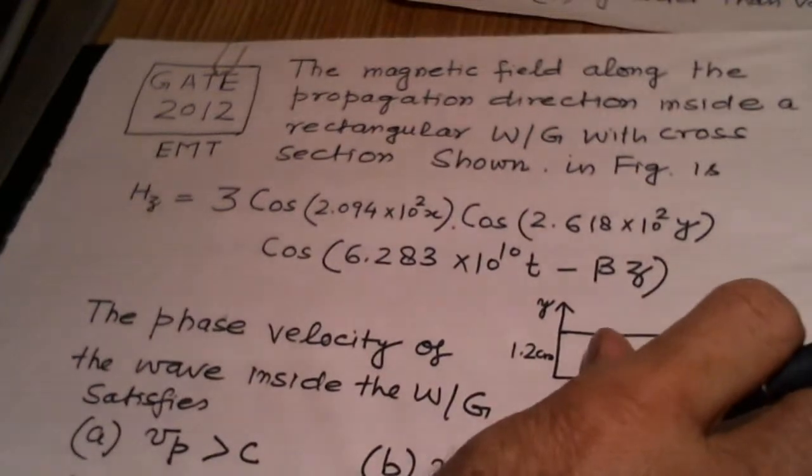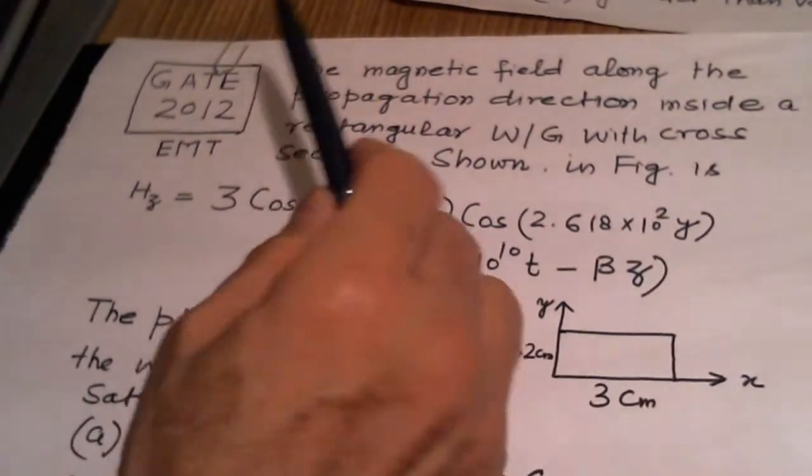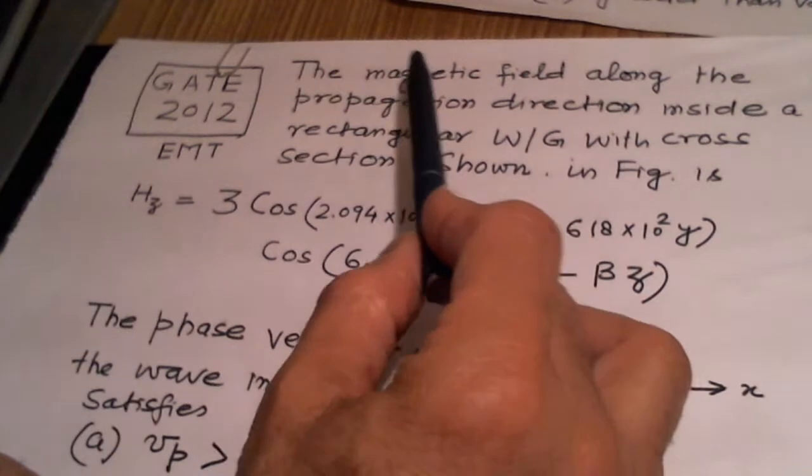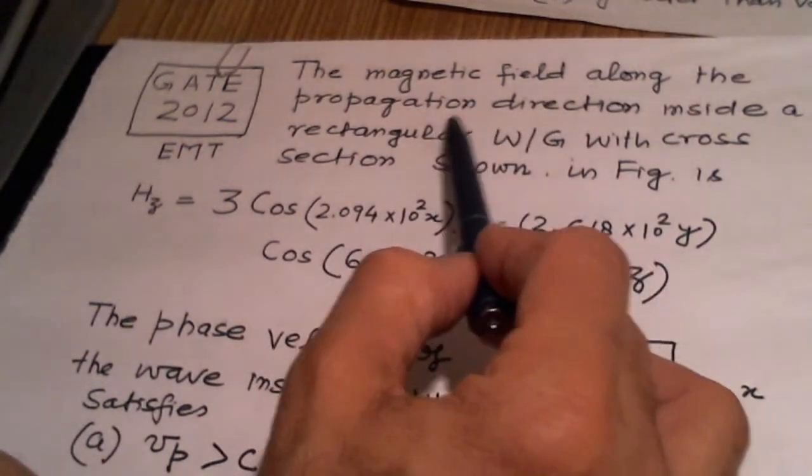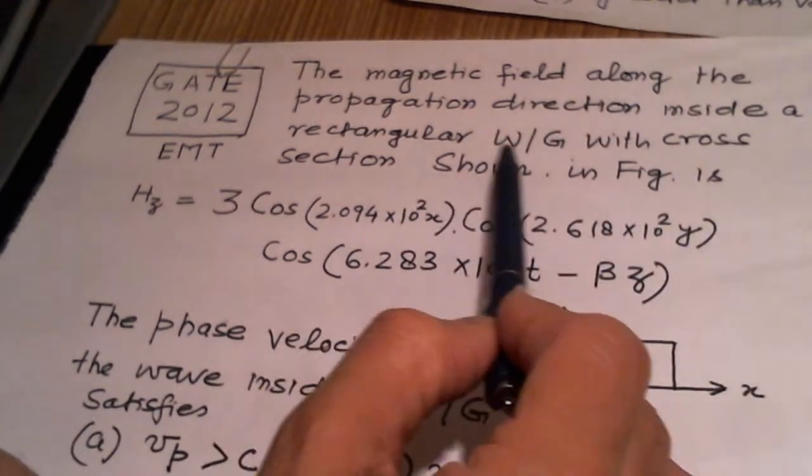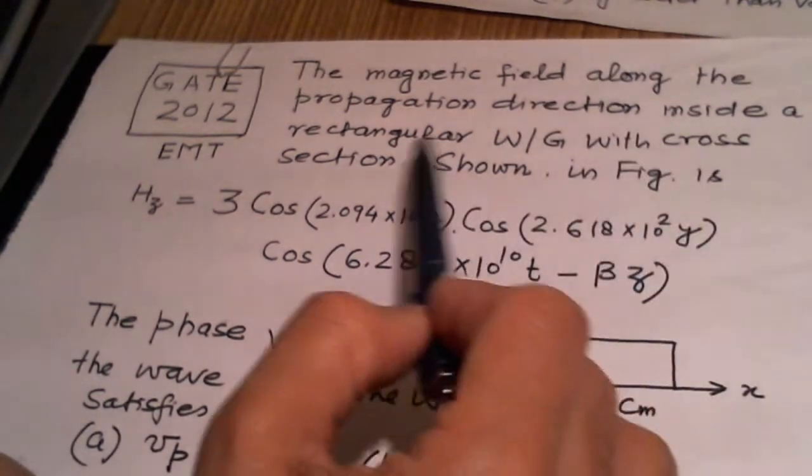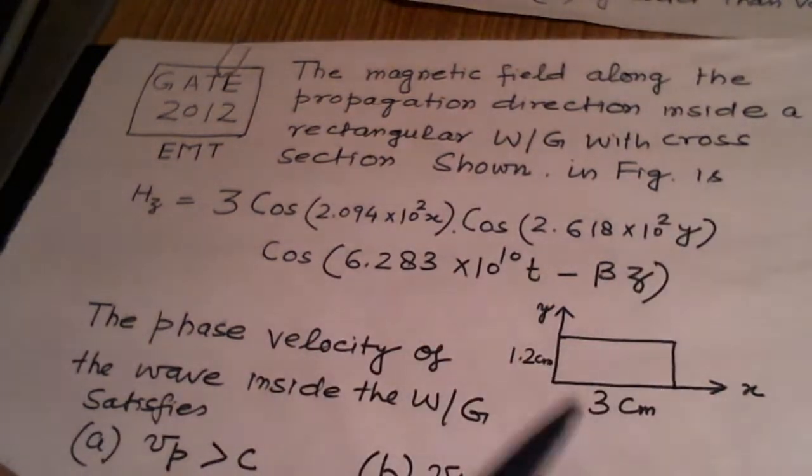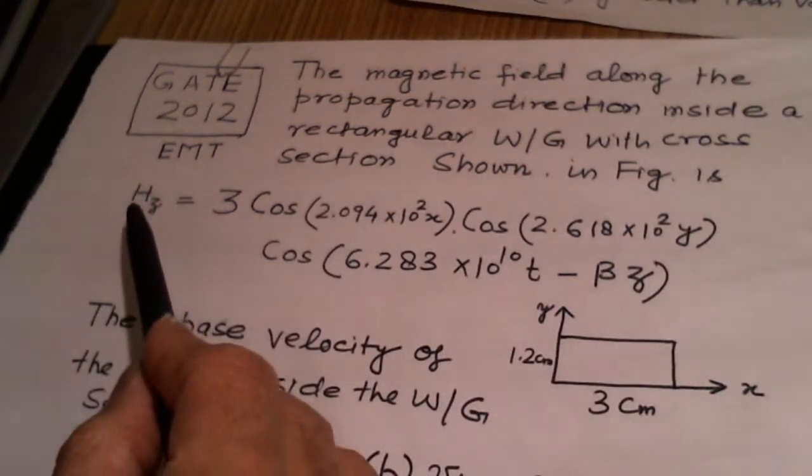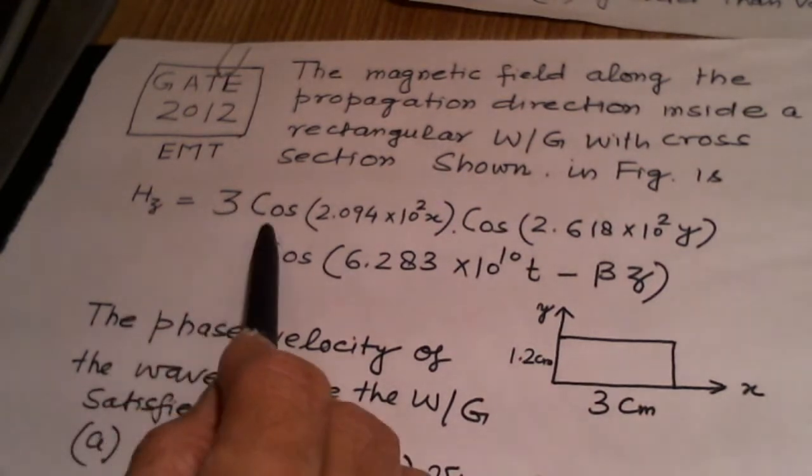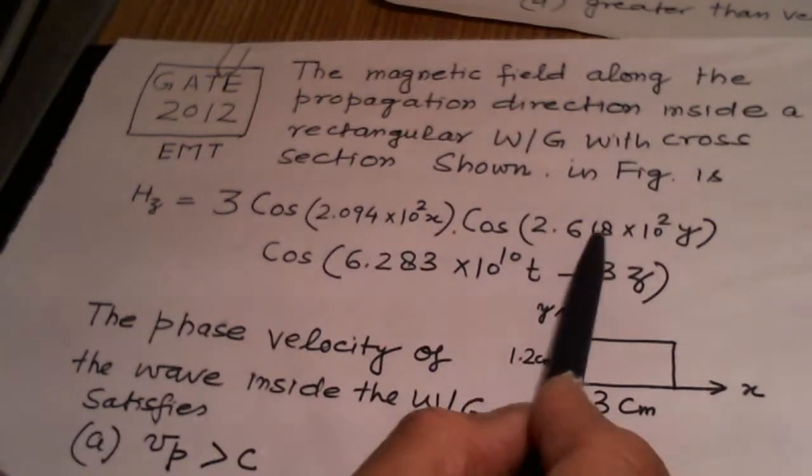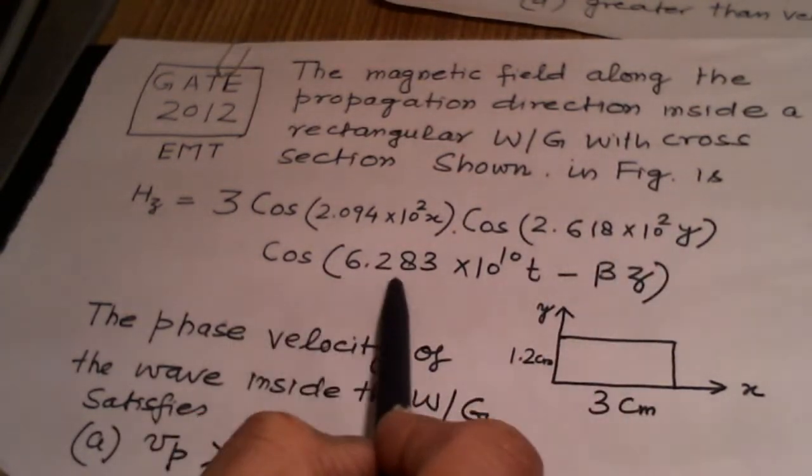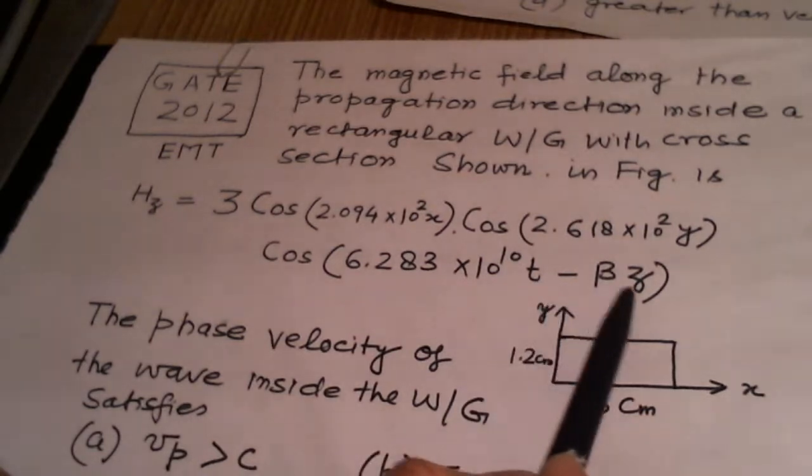Now, we will see another problem which has appeared in the GATE 2012 examination. It says that the magnetic field along the propagation direction inside a rectangular waveguide with cross-section shown in figure here. The magnetic field Hz is given 3 cos 2.094 times 10 squared x, cos 2.618 times 10 squared y, cos 6.283 times 10 t minus beta z.